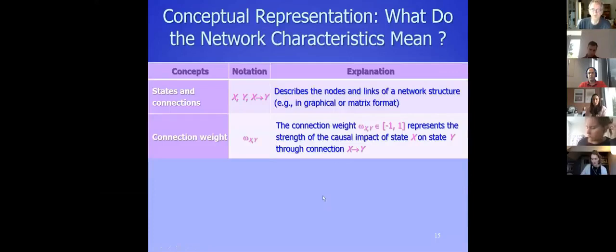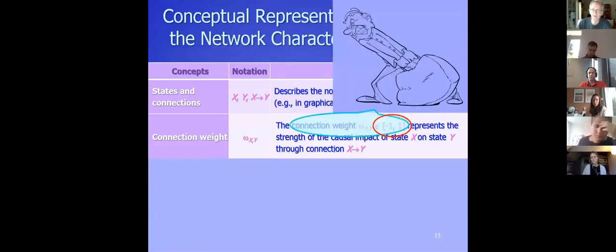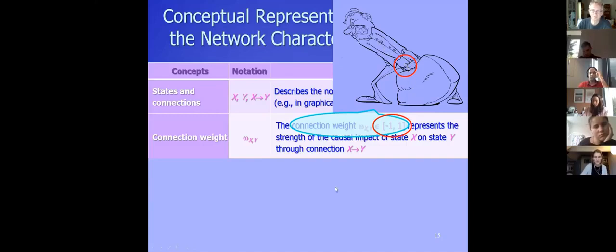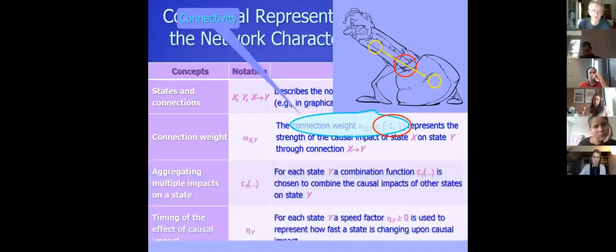To summarize: we have states and connections describing the nodes and links of a network. We have connection weights, usually between minus one and plus one, and if only positive connections, between zero and one. We have an aggregation or combination function specifying how multiple impacts are combined. And each state has its own dynamics indicated by a speed factor. Also, the characteristics themselves could change over time — that's the area of adaptive networks, which will come later.